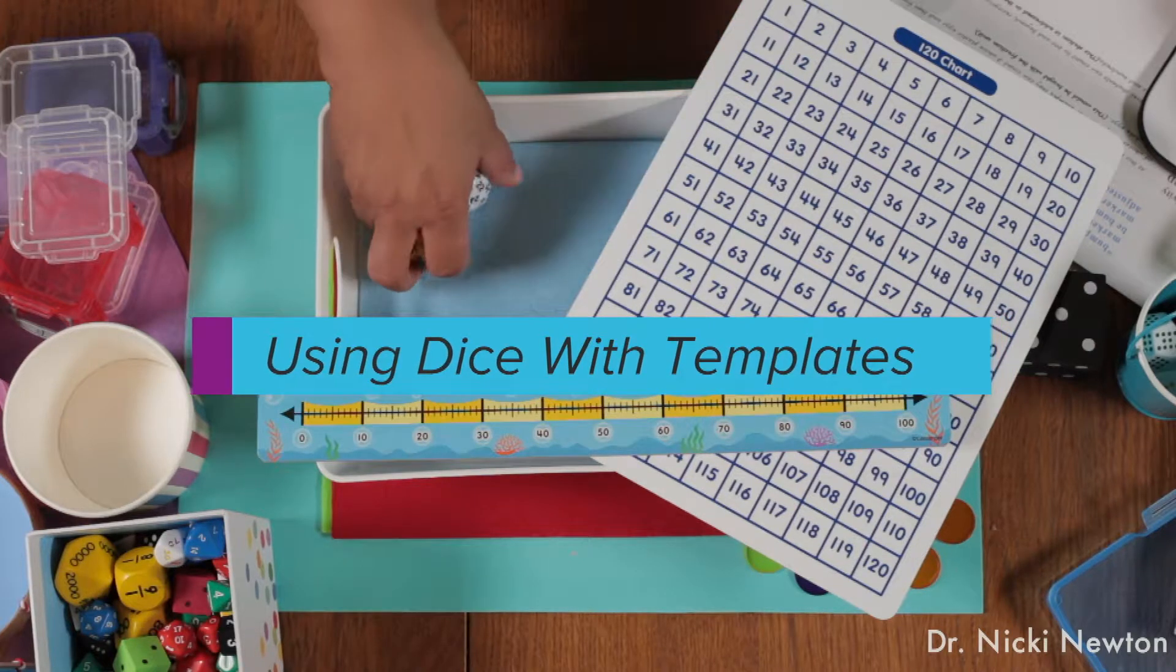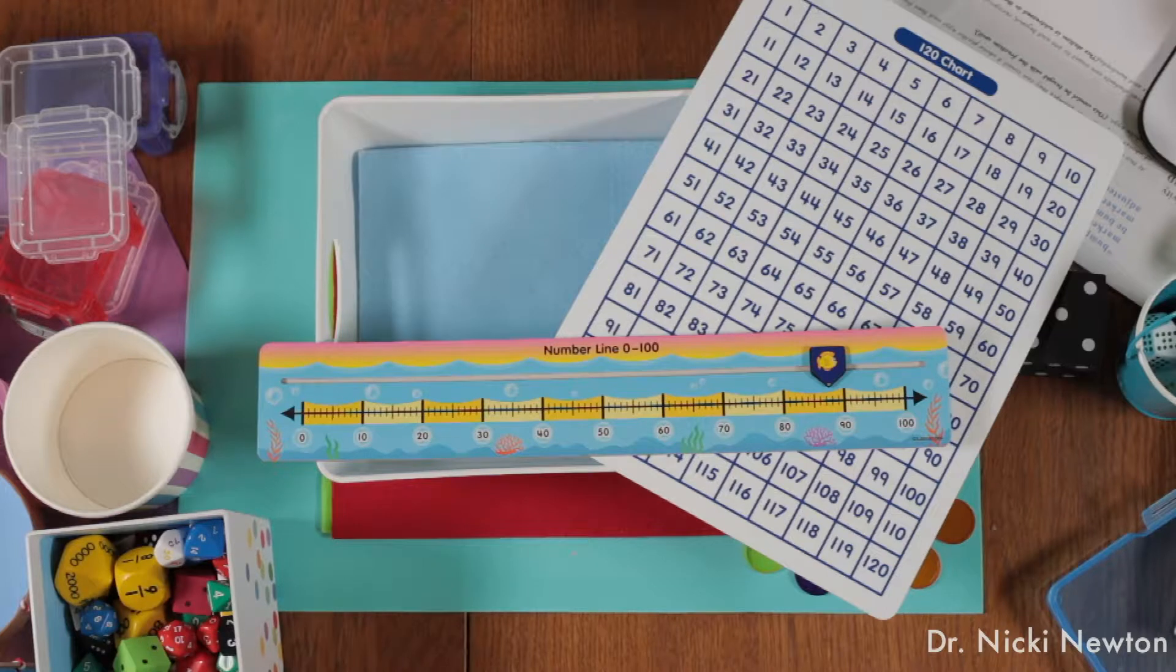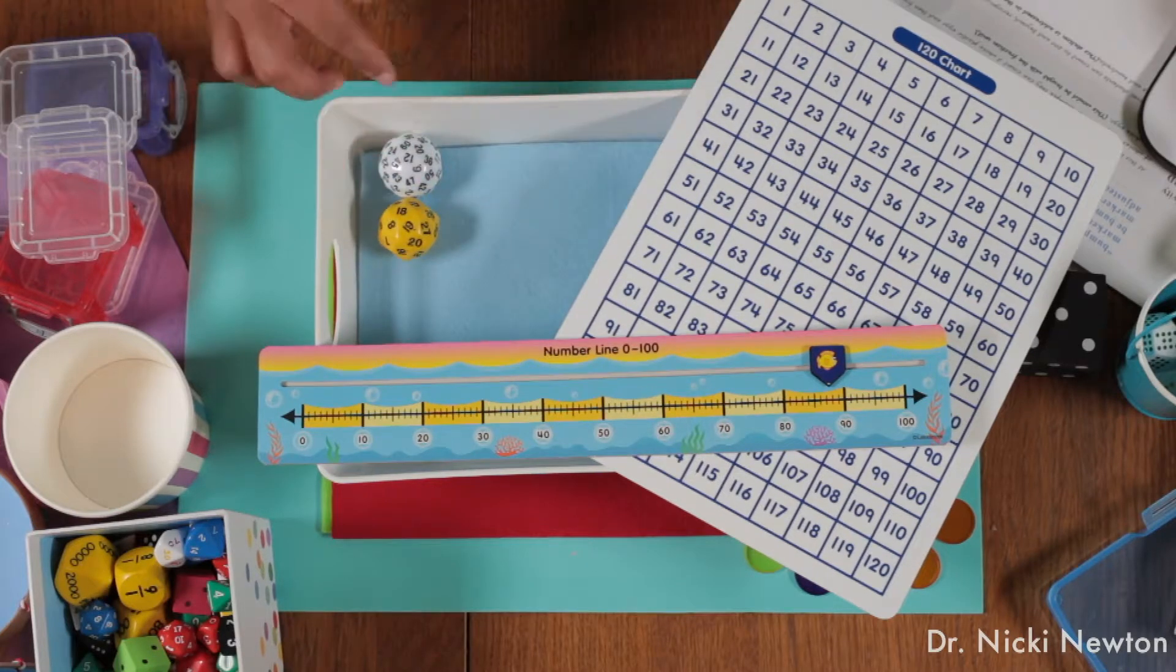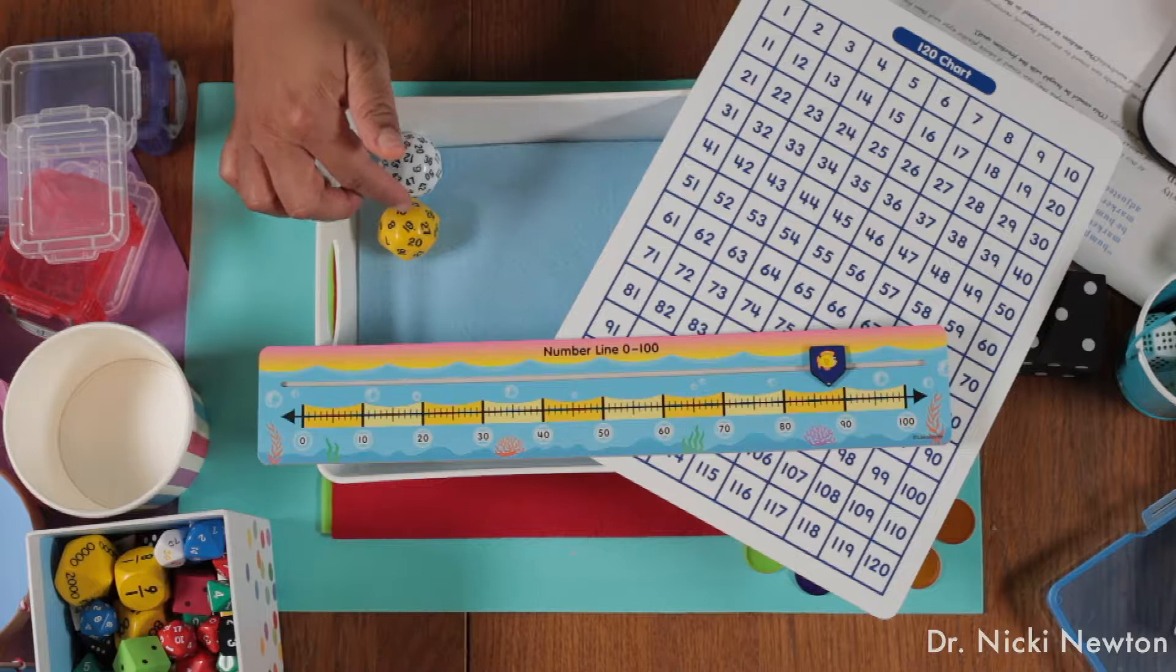So you could have the kids - this is a dice container, and it just has felt in it so that the kids can roll the dice. I rolled 12 and 19.